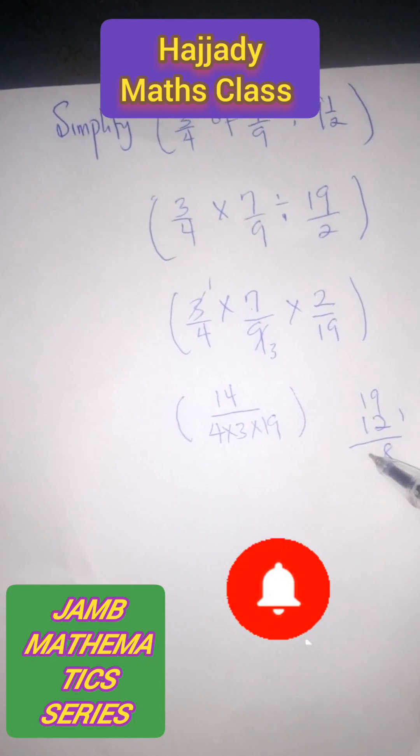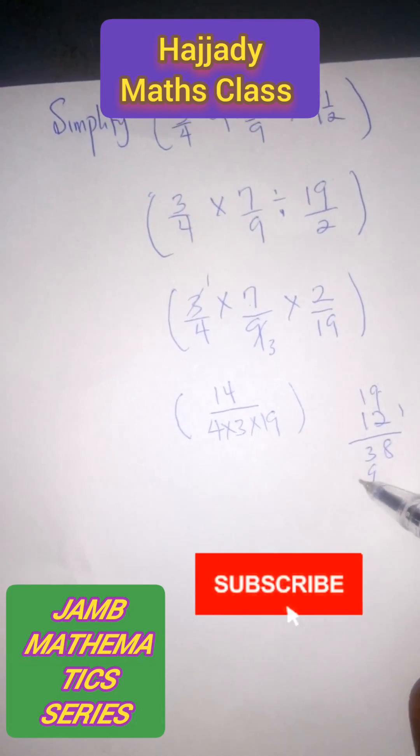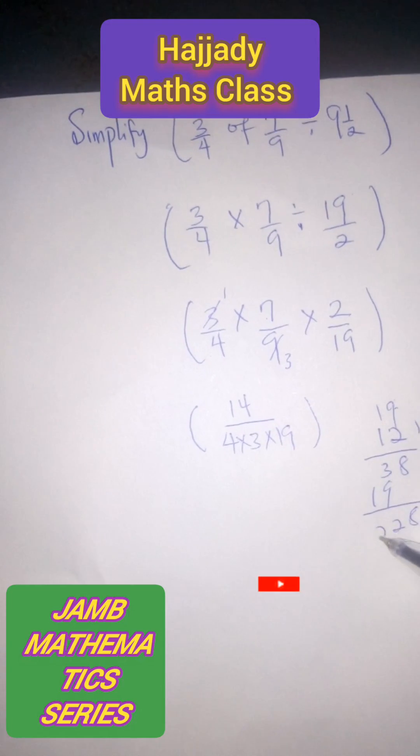2 times 1 is 2 plus 1, we have 3. 1 times 9 is 9. 1 times 1 is 1. And here we have 8, 2, 2.